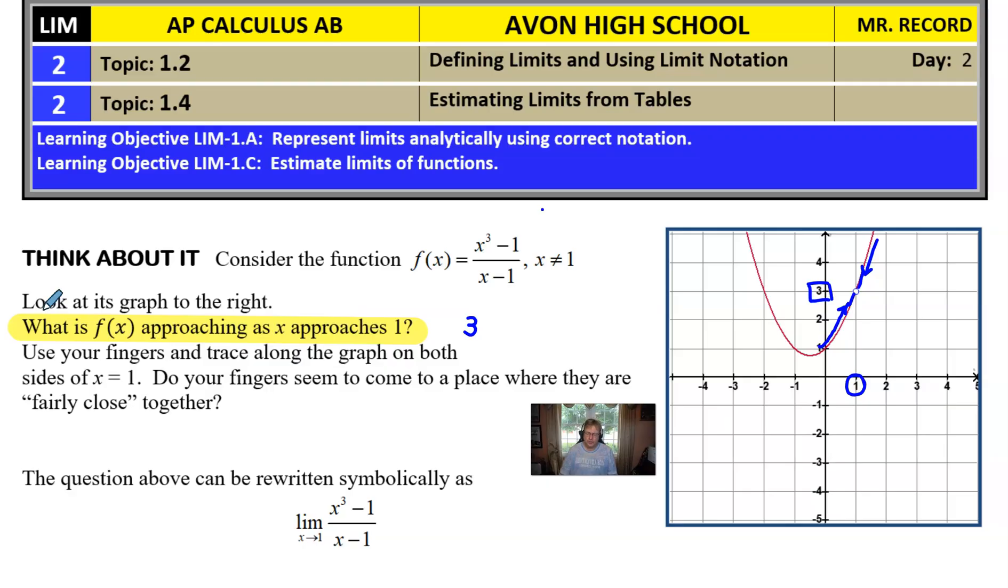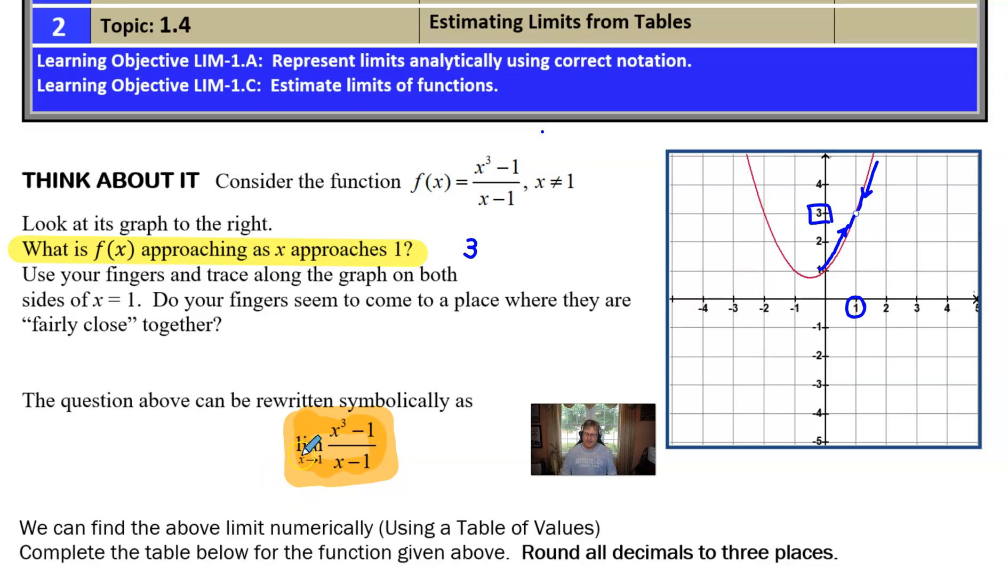So instead, we can use the notation that I have here highlighting in orange. We can put this LIM statement in front of our expression and put an x approach 1. That's how we would read that little arrow. And so this whole thing can be read as the limit as x approaches 1 of x cubed minus 1 over x minus 1. It's also acceptable to reverse the order and say the limit of x cubed minus 1 over x minus 1 as x approaches 1.